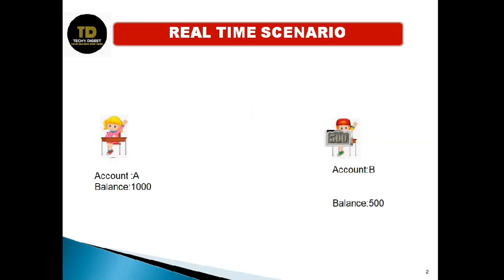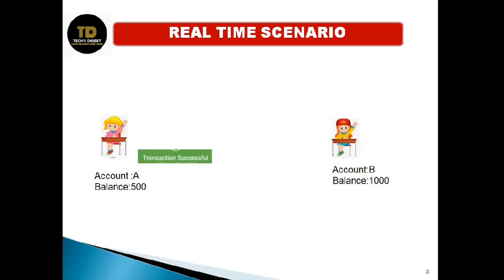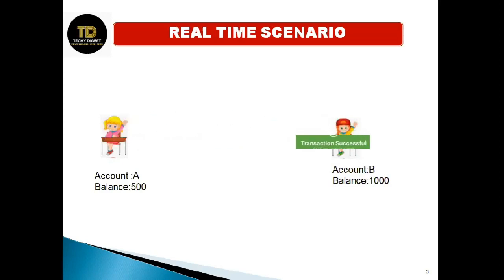After a successful transaction, account A balance will be 500 rupees and account B balance will be 1000 rupees. This is the result of a successful transaction.